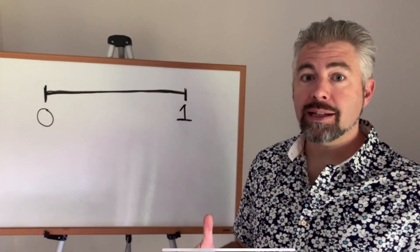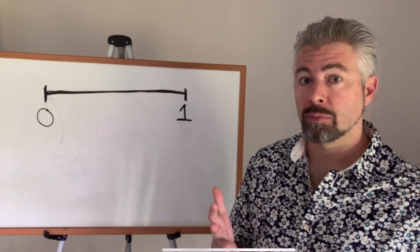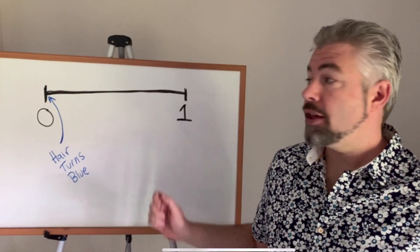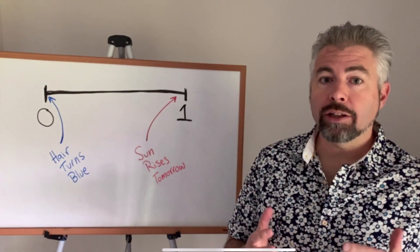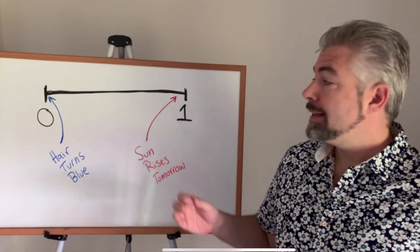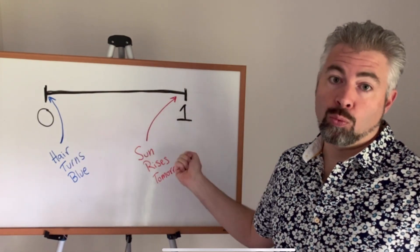So, for example, I might say that there's about zero probability that my hair will suddenly turn blue. On the other hand, it's almost certain that the sun will rise tomorrow. Now, in reality, most events aren't so clear cut. Usually, each event has a certain likelihood somewhere in between zero and one.